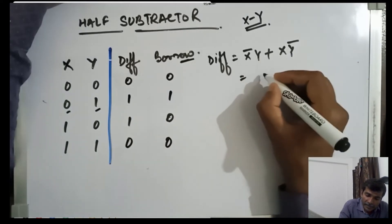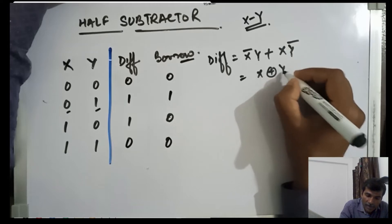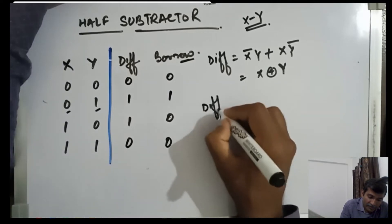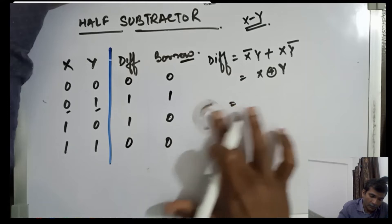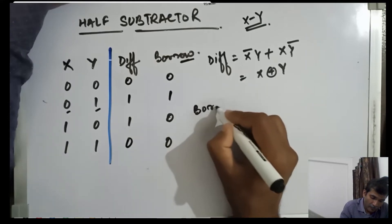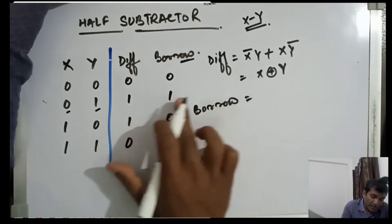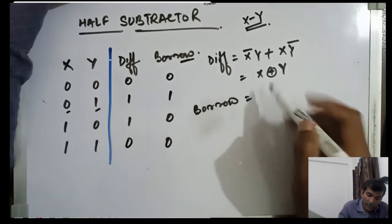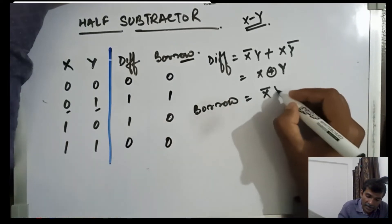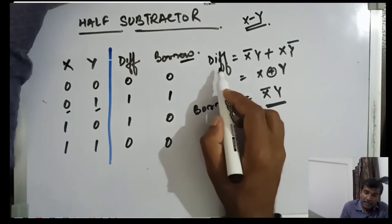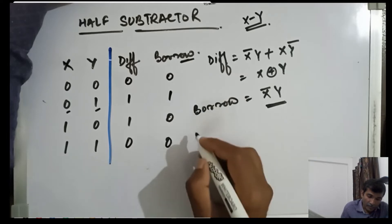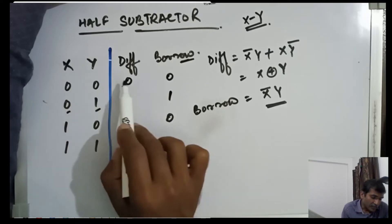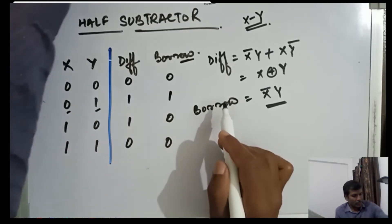So difference equals x̄y + xy̅, which is XOR of x and y. Now for borrow: borrow is equal to 1 if and only if x is 0 and y is 1, so borrow equals x̄y. These are the two functions for difference and borrow. Note that if you interchange the bits, the results will be different.